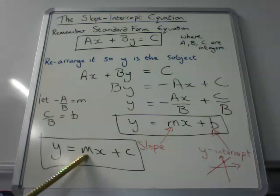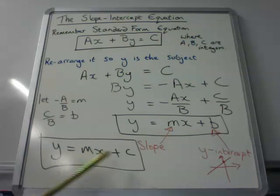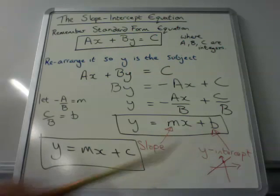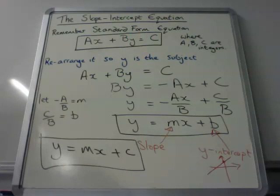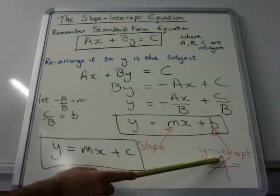Where the m values represent the slope, the gradient, the steepness. And the c or the b, depending on the version you use, represents where the line cuts the y axis.